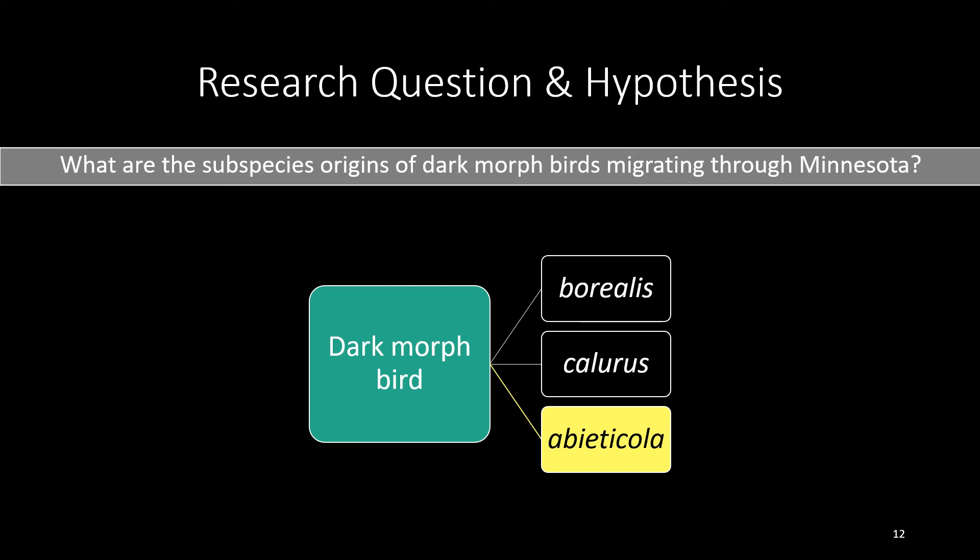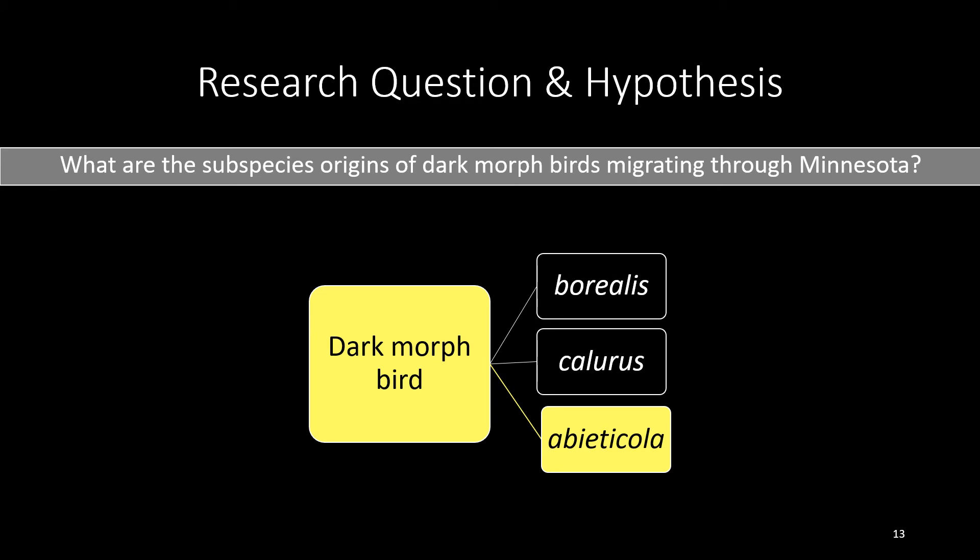Lastly, the majority of light morphed red-tailed hawks moving along the shore of Lake Superior through Duluth are described as Abieticola. We hypothesize that dark morphed birds migrating through Minnesota most likely originate from the informal northern subspecies of red-tailed hawk. Despite having these rationales for our hypothesis, it's important to acknowledge that there is currently no formal evidence proving dark morphs occur in Abieticola, nor are there distinct plumage characteristics that can distinguish dark Abieticola from dark Chloris. So, being able to provide evidence would be groundbreaking in the field of raptor biology.